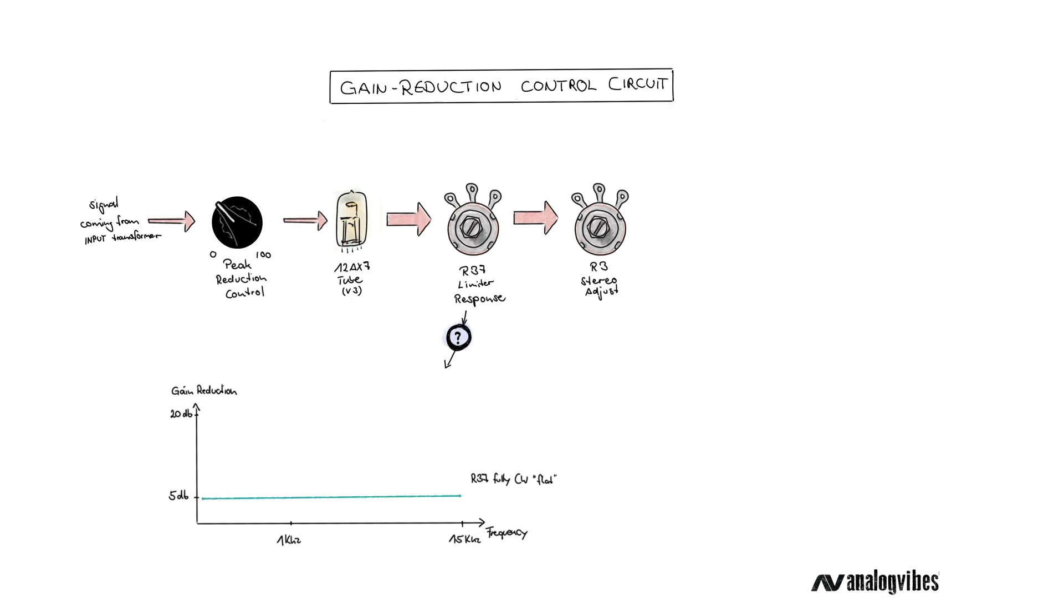By turning R37 counterclockwise, the compressor starts to compress high frequency content of the programmed material more than the lower frequencies. To be precise, this only affects frequencies above 1 kHz and is increasing towards higher frequencies.